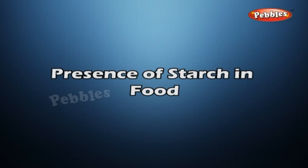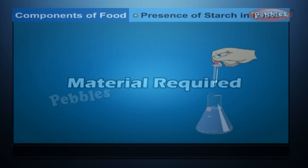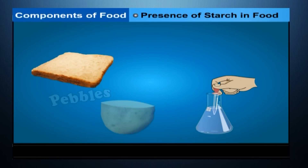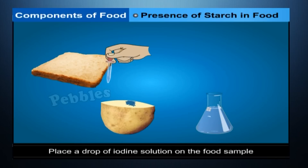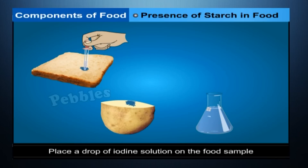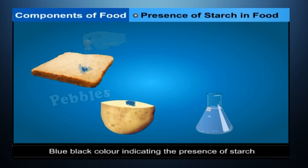Presence of Starch in Food — Materials required: You need a slice of bread or potato, iodine solution, and a dropper. Place a drop of iodine solution on the food sample. A blue-black colour where the iodine solution is applied indicates the presence of starch.